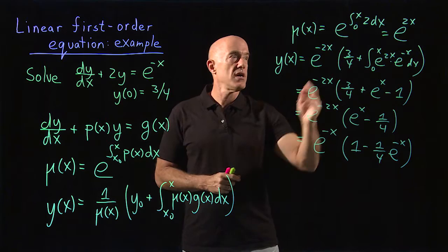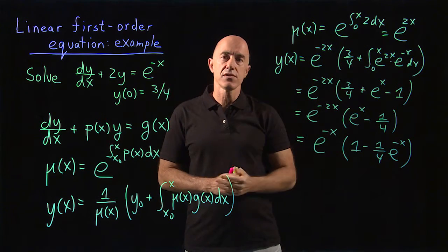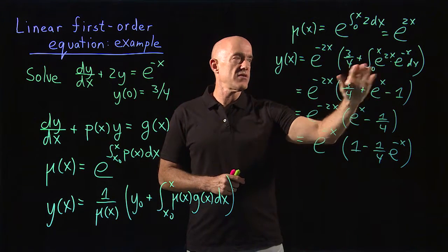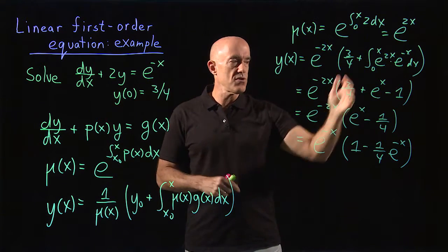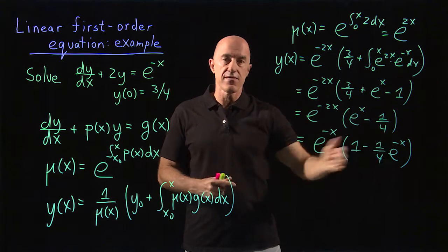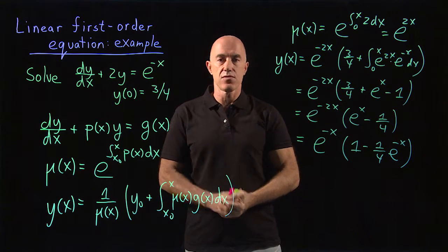So you have to do two integrals: one for the integrating factor and then one for the integral of μ(x)g(x)dx. If you can do those two integrals, then you can get a very nice closed form for your solution.